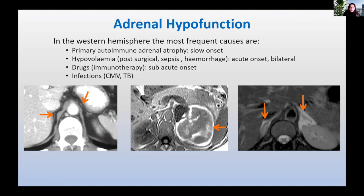Infections are not so common in the Western world, but CMV and TB are still very frequent causes worldwide. In autoimmune adrenal atrophy, the adrenal glands are extremely difficult to find — little hair-like slits because they have completely atrophied. Post-operative haemorrhage in both adrenal glands involves over time, and depending on the extent of haemorrhage, the patient may become fully Addisonian. In CMV in a patient with HIV and AIDS, the adrenal contour is visible within the glands, but all around them is oedema on T2-weighted imaging. Post-contrast, the underlying adrenal enhances if it still has vascularity, but the oedema does not enhance.